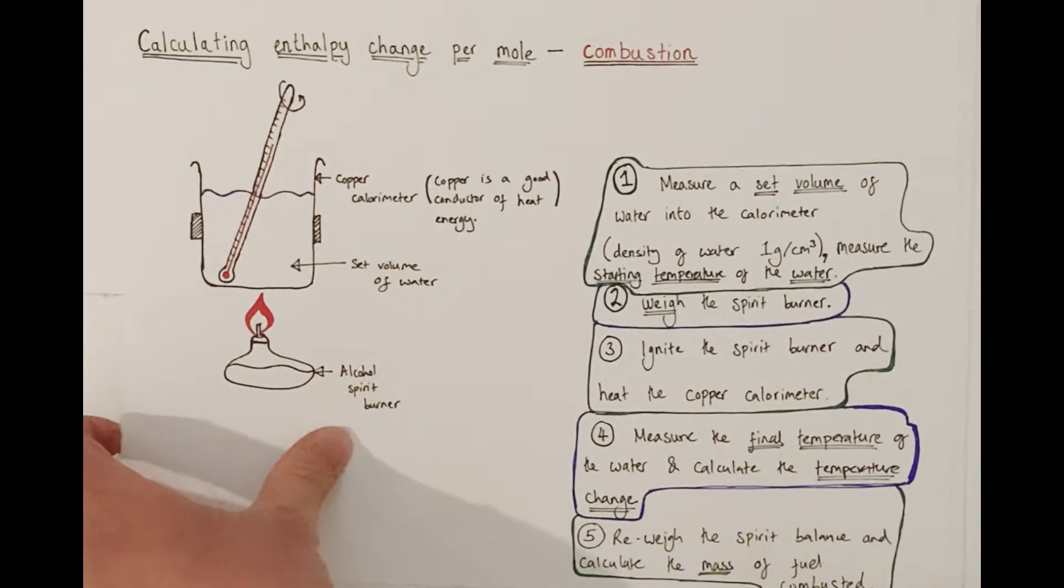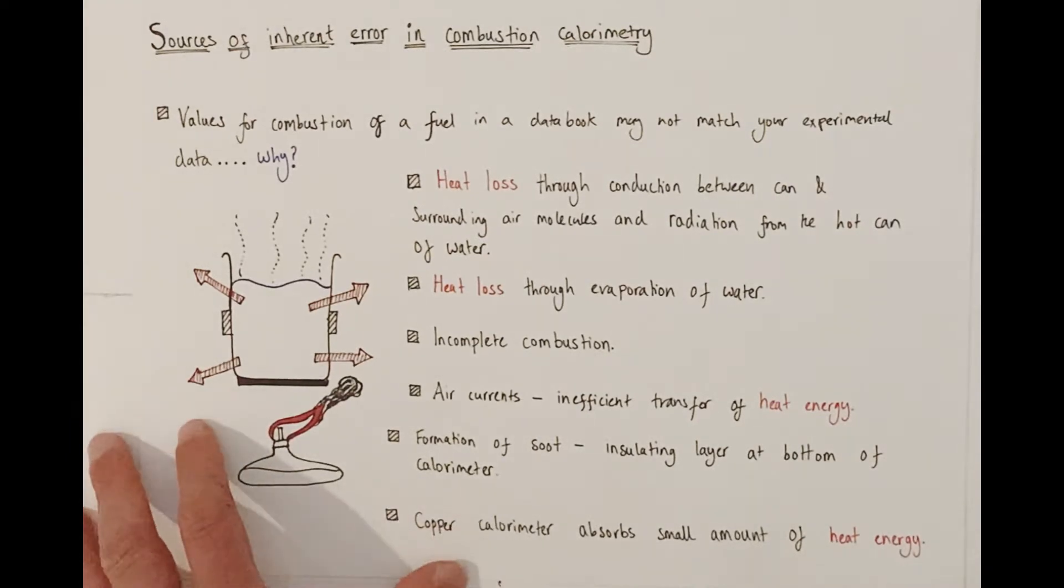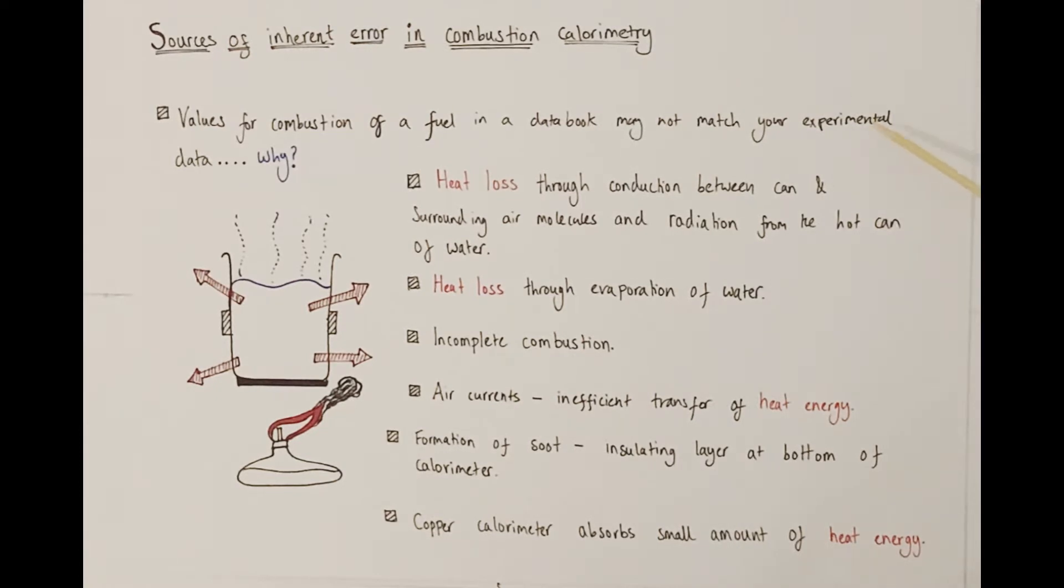That is the basic method of combustion calorimetry. Now, there will be some inherent sources of error in your experiment. You will find that if you compare the value you generated to that found in a data book, you will not have an exact match. Your experimental value will have a difference.